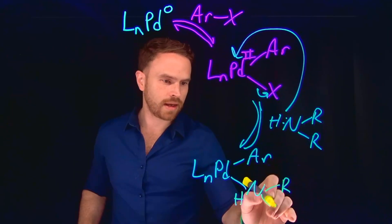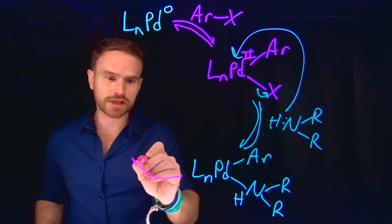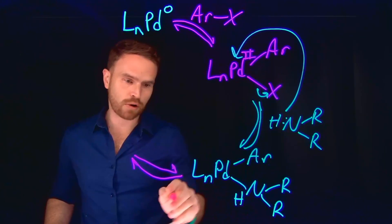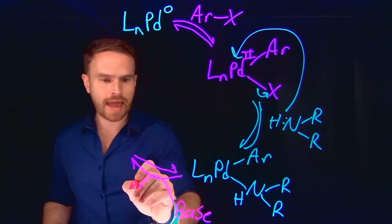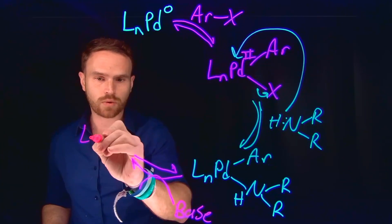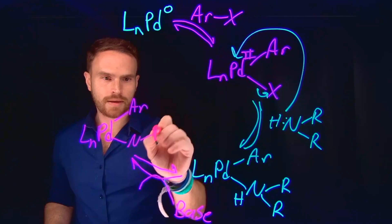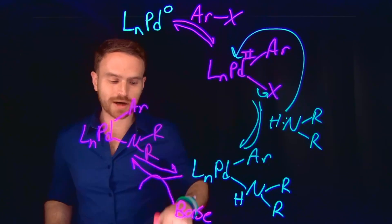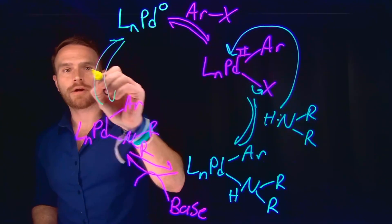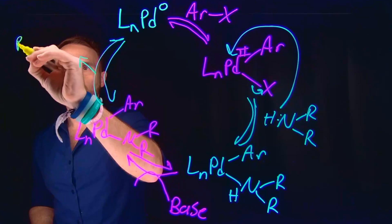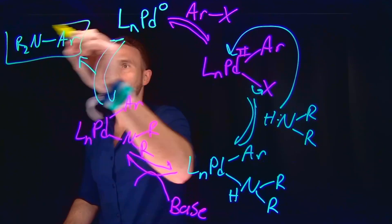Importantly, that amine can then be deprotonated in the next step where the base that we're using in this reaction can come and deprotonate this proton through the addition of a base. What will happen is that now we will have that amine ligand that has been deprotonated. Subsequently, reductive elimination can occur to form our new carbon-to-nitrogen bond, where now we are left with our new carbon-to-nitrogen bond and our arylamine.